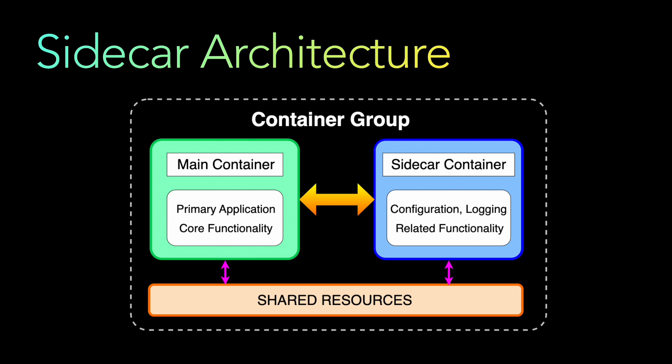A sidecar pattern is primarily a software architecture pattern in which an additional process — called a sidecar — is deployed alongside a primary application to provide supplemental functionality. The pattern is often used in microservice architectures. In this example, there is a main container with a primary application that handles core functionality, supported by a sidecar container which does peripheral tasks like configuration and logging.